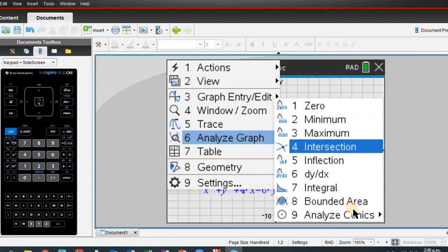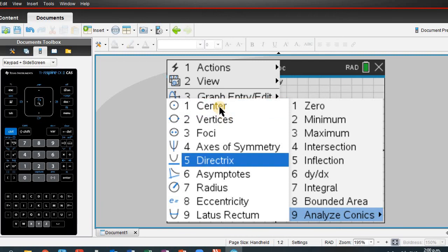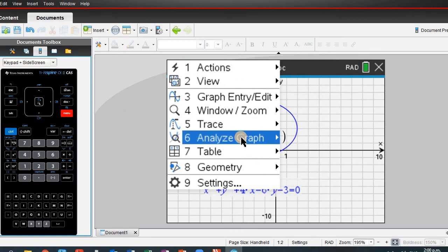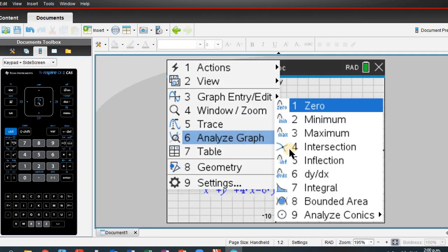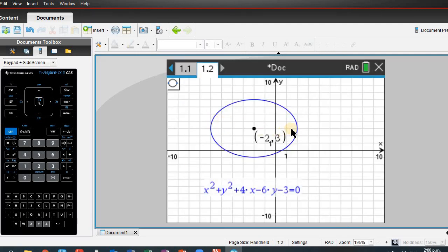Let me see whether I can show the vertices. Analyze, this is a conic section, and the center. So the center is minus 2 comma 3.